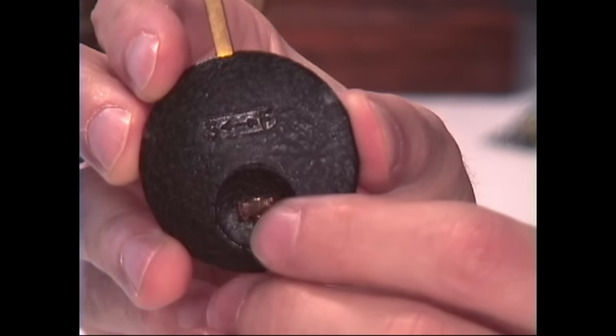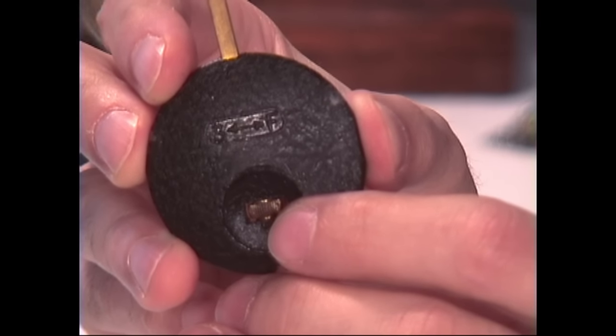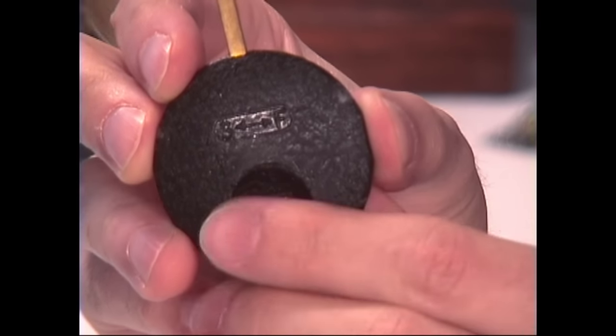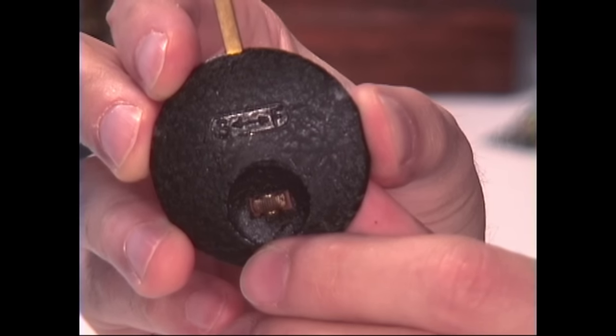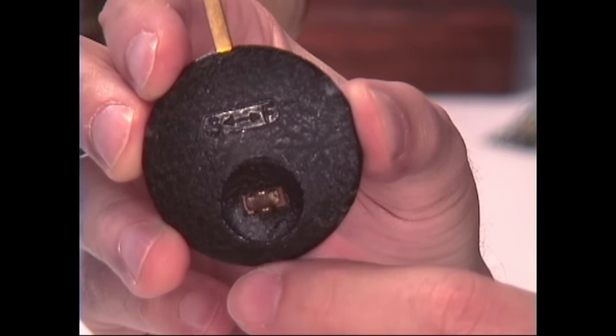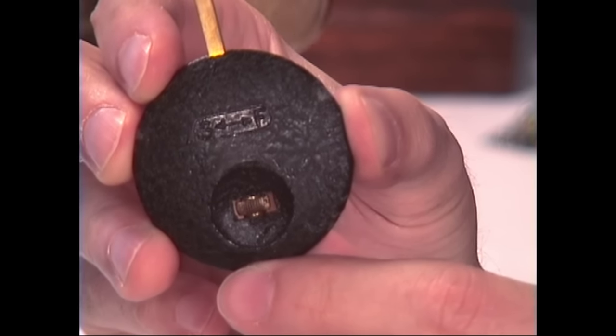So if you turn this little screw here to the right, it'll go faster. If you turn it to the left, it'll go slower. And what it's doing is that it's shortening and lengthening the pendulum.